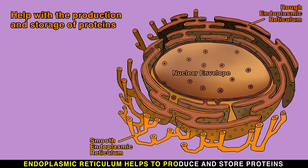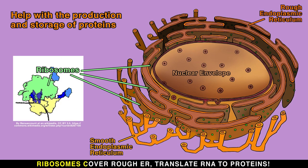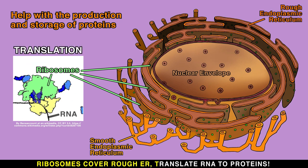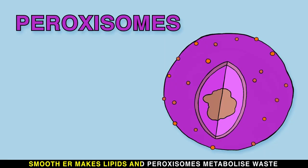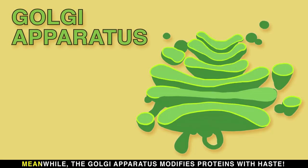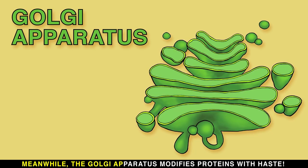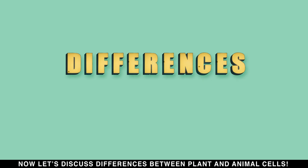Endoplasmic reticulum helps to produce and store proteins. Ribosomes cover the rough ER and translate RNA to proteins. Smooth ER makes lipids and peroxisomes metabolize waste, meanwhile the Golgi apparatus modifies proteins with haste.